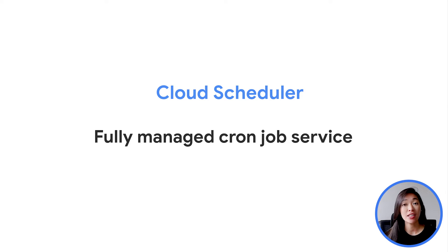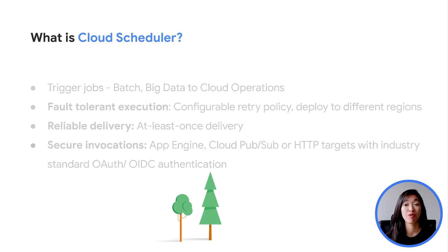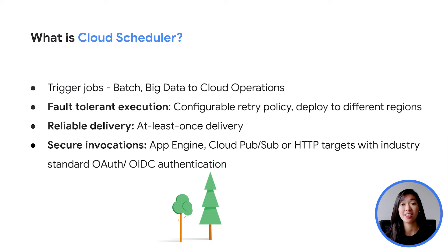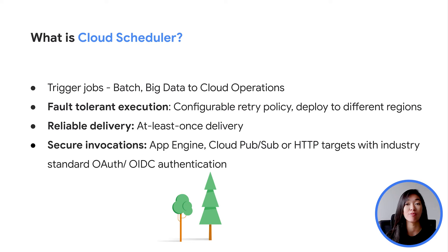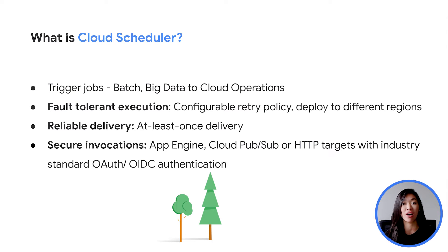On the other hand, you have Cloud Scheduler, which is our version of a fully managed cron job service. Cloud Scheduler helps to trigger jobs from batch jobs to big data and cloud operations. You can configure your jobs to retry in case of any failures or errors, and you can set a maximum number of retries to add resiliency. Cloud Scheduler also lets you automate your retries and execute a job in a fault-tolerant manner by deploying to different regions so that you can eliminate the risk of a single point of failure, as seen in traditional cron services.